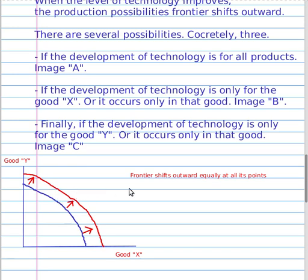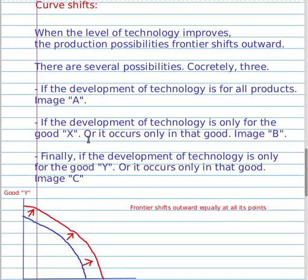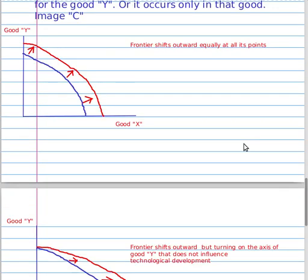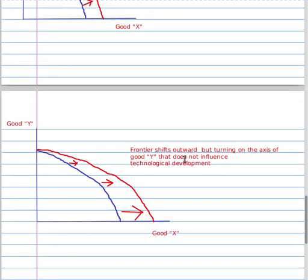If the development of technology is only for Good X, or it occurs only in that good (Image B), the frontier shifts outward but pivots from the axis of Good Y, which does not experience technological development.